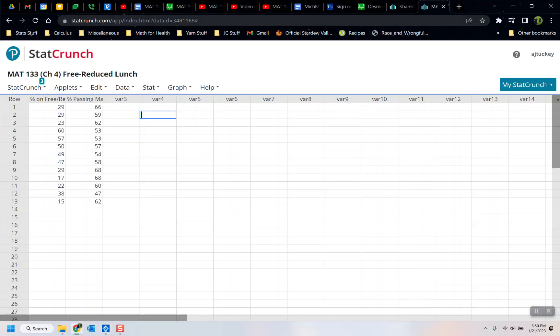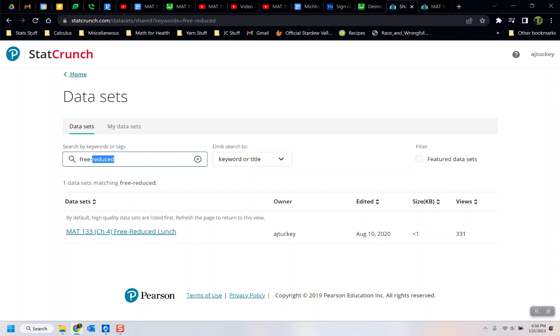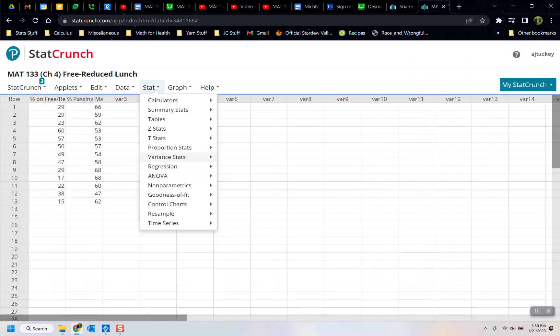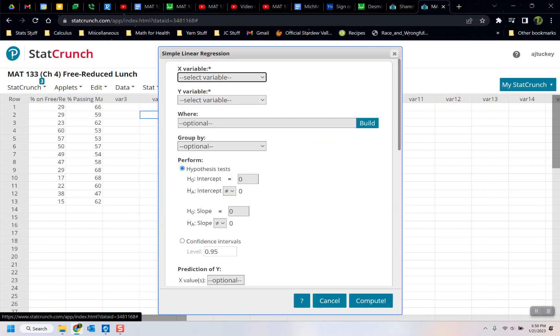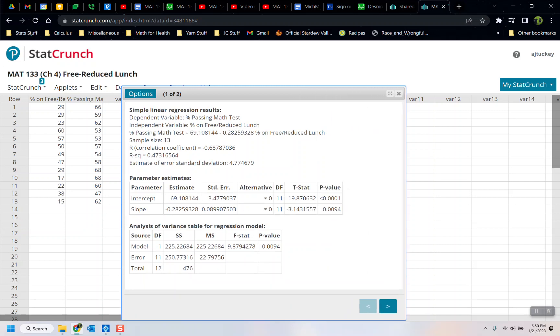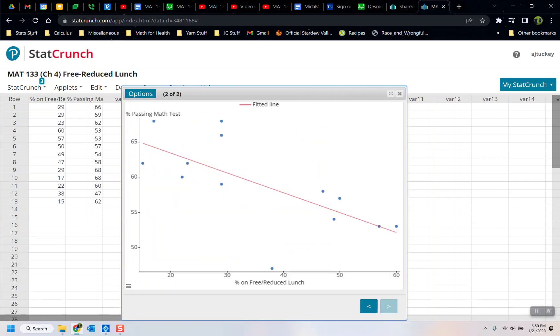If we go to the data set in StatCrunch, which we can find by looking up Free Reduced among the free data sets, we go to Stat > Regression > Simple Linear, choose the X variable and Y variable, then compute. It gives us this huge window and also the graph, which is nice.